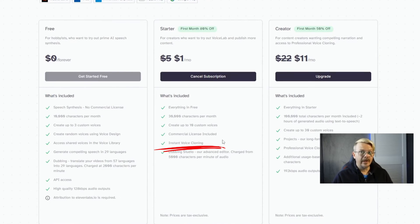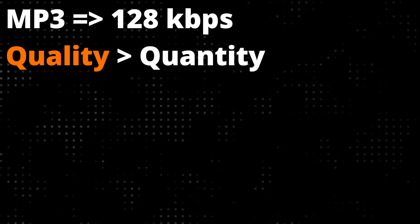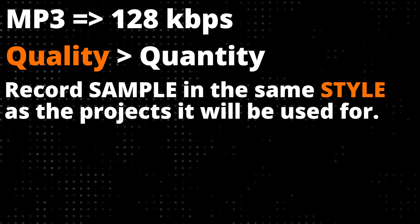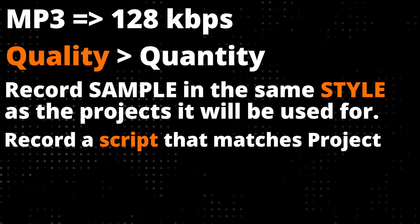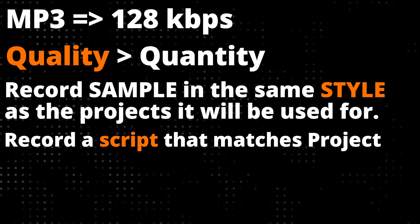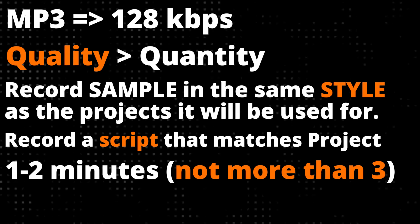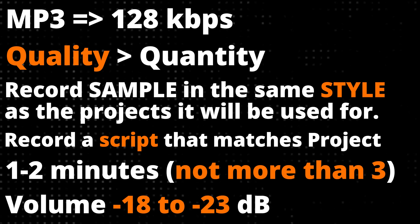Instant voice cloning is what I've been using here in Eleven Labs, and that's available in the starter plan and above, which allows up to 10 custom voices. I've created several instant voice clones using different samples to see how they worked out, and I'm finding that the sample really does make a difference. So remember: MP3 at 128 kilobits or higher. The quality of the voice and the environment matters a lot more than the quantity, so speak in the way that you want your voice clone to speak when you use it in projects. One to two minutes of sample recording is the sweet spot — over three really doesn't help and might hurt. Try and keep that volume between negative 23 and negative 18 with a true peak of minus three. If you've got any tips that I missed, drop them in the comments — I'd love to hear them.